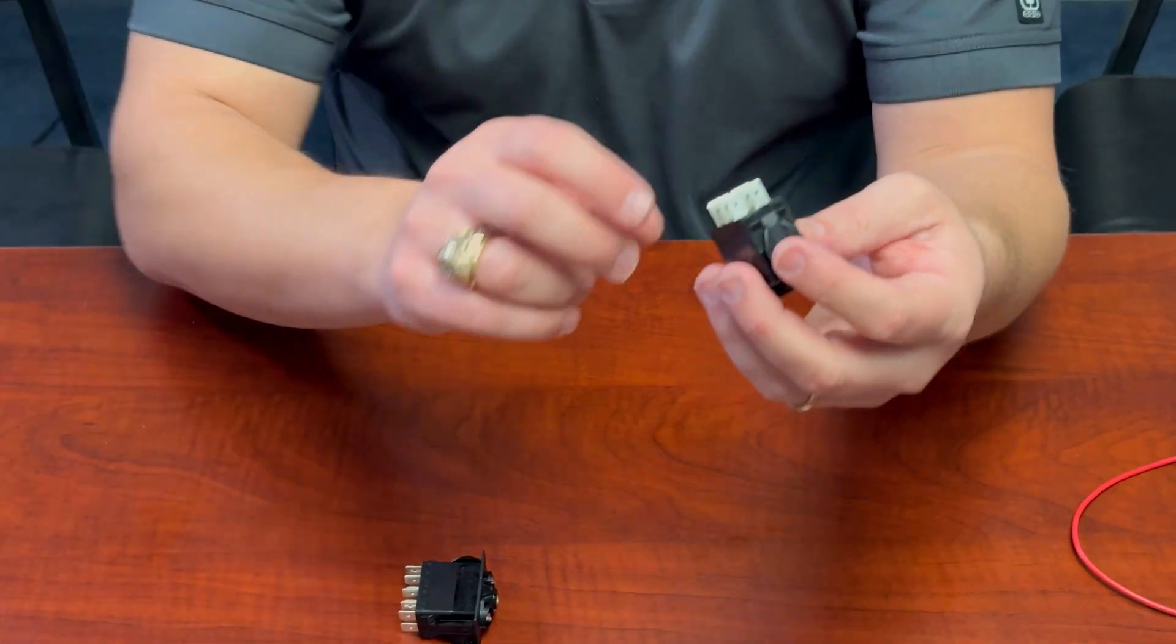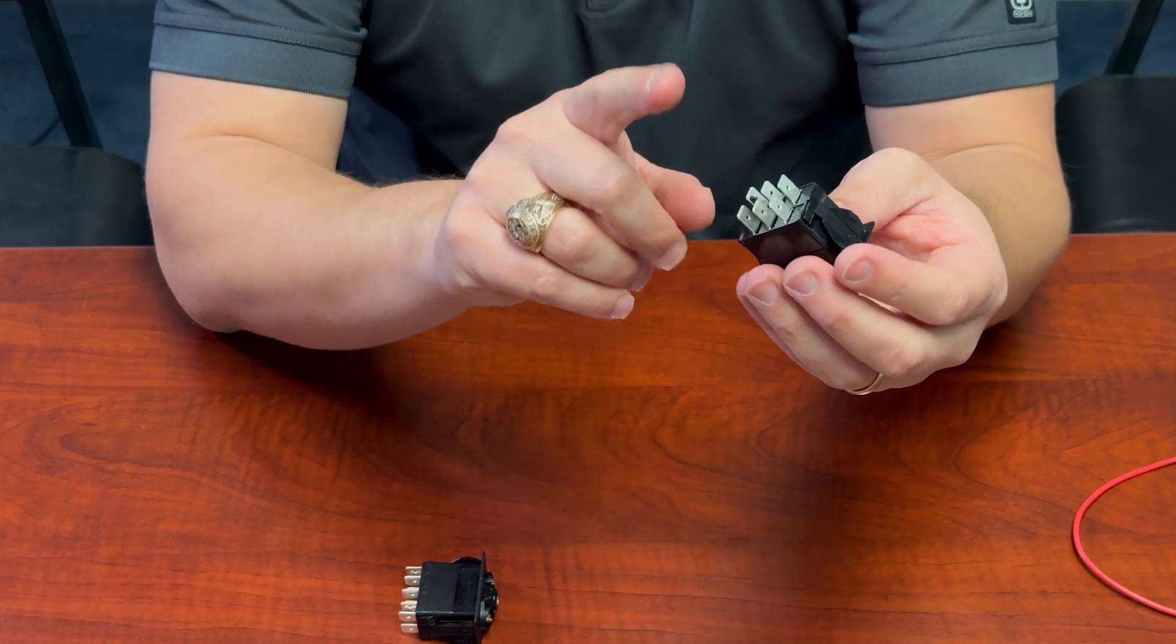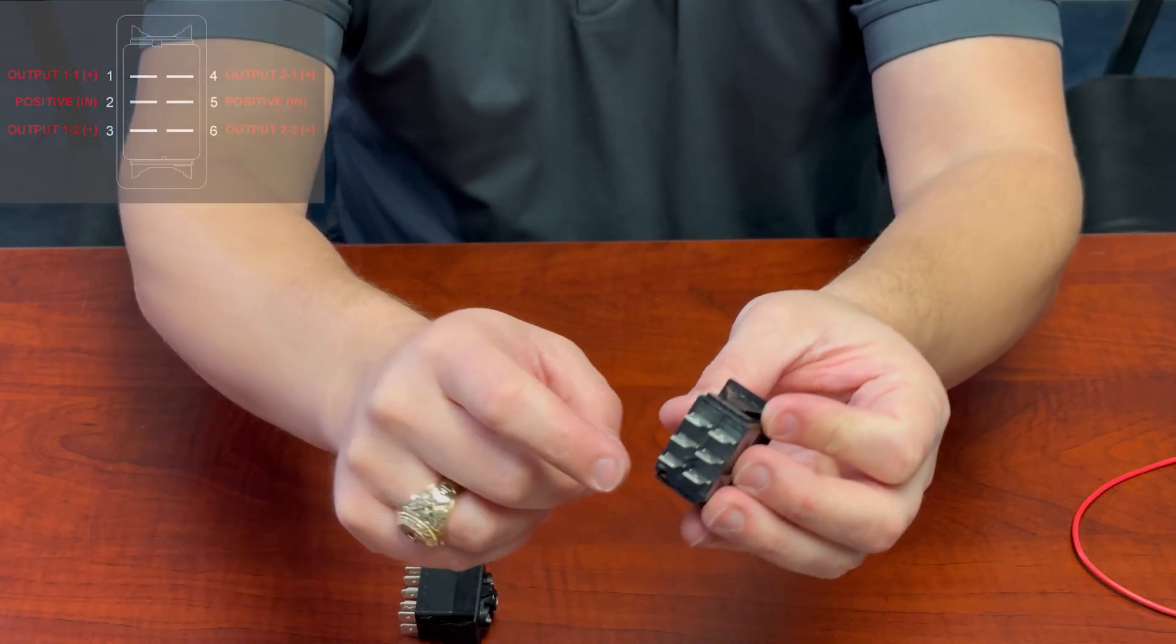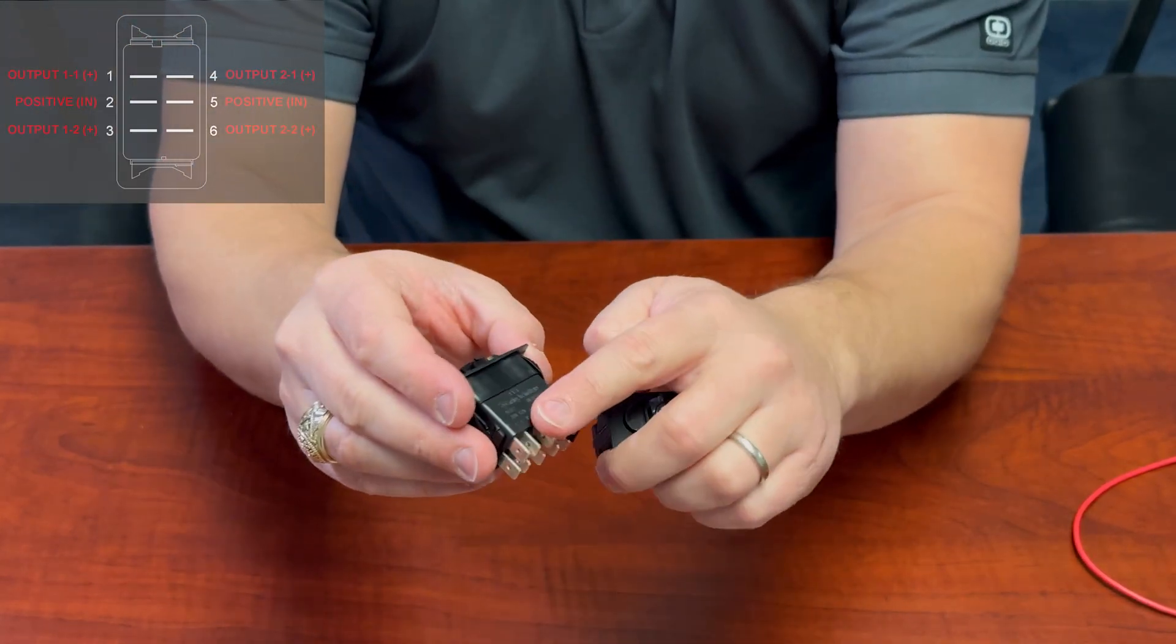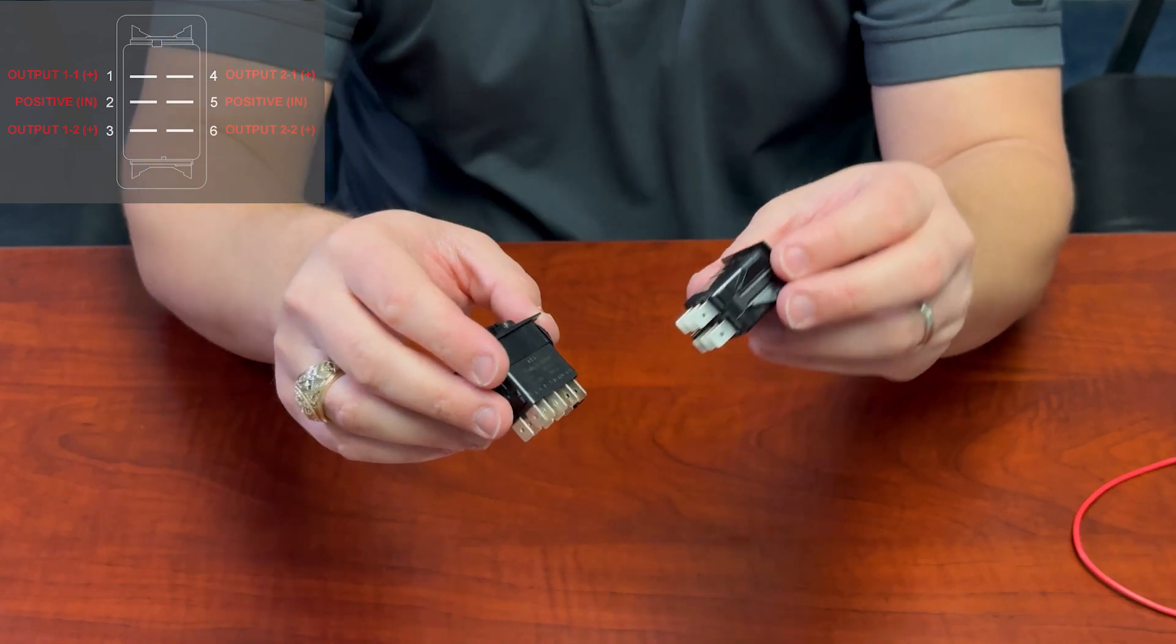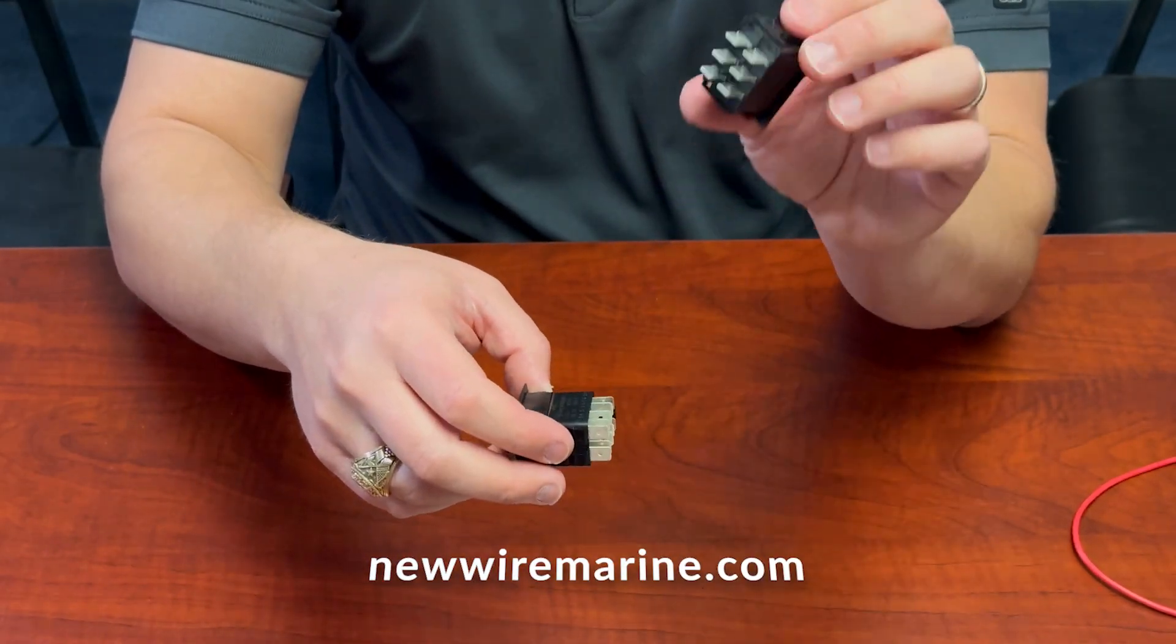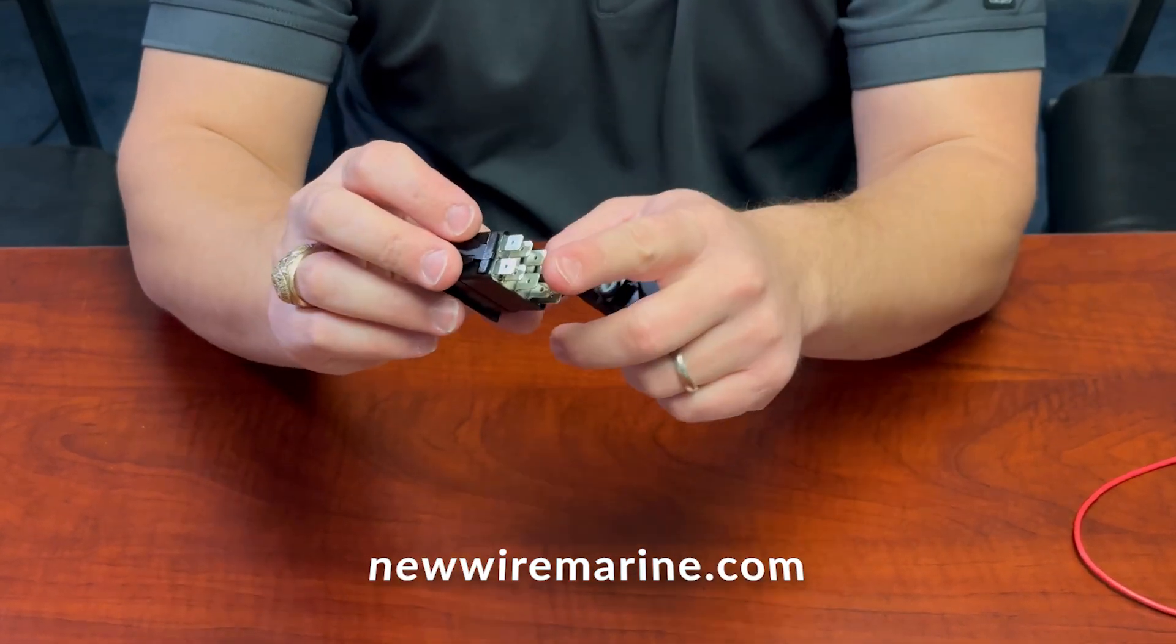Now like we've talked about, the switches we need are double pole, double throw. Those will have six contact terminals on them. And you can know the contact numbers by little imprints in the side of the switch, or sometimes they're on the back of the switch, or sometimes they're on the side of the switch like this. And we're going to go through two different variants. And we carry both of these at New Wire Marine. One with an unlit switch that has no lights in it, and one that's a 10 terminal switch with lights in it.